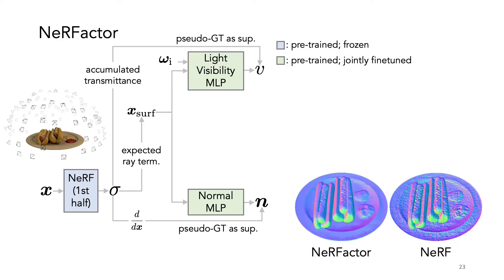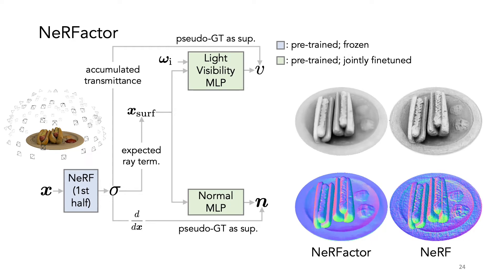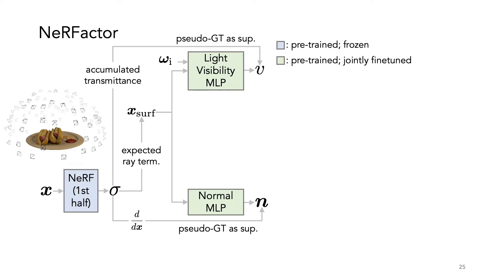Similarly, we have a visibility MLP that tries to refine and improve the NeRF visibility maps. We now get the shape aspect covered. What about reflectance?